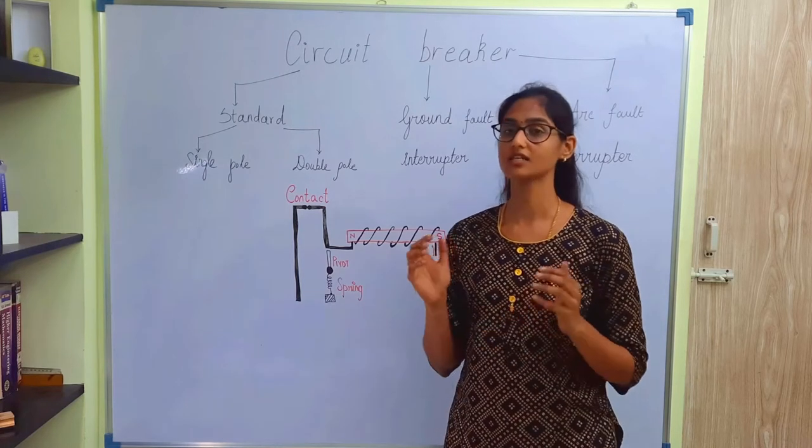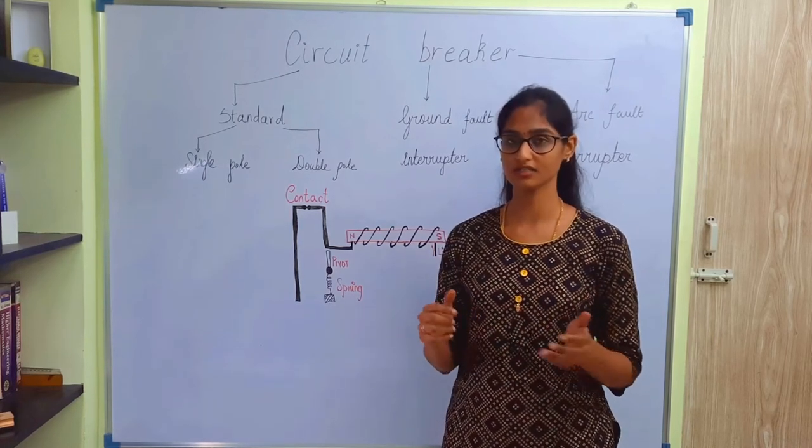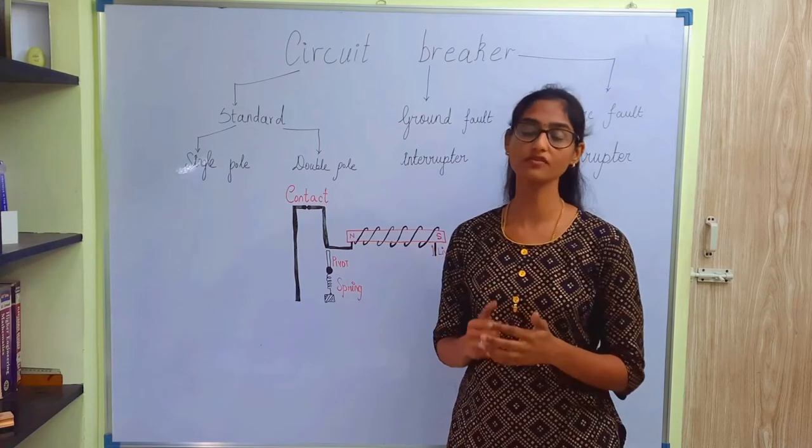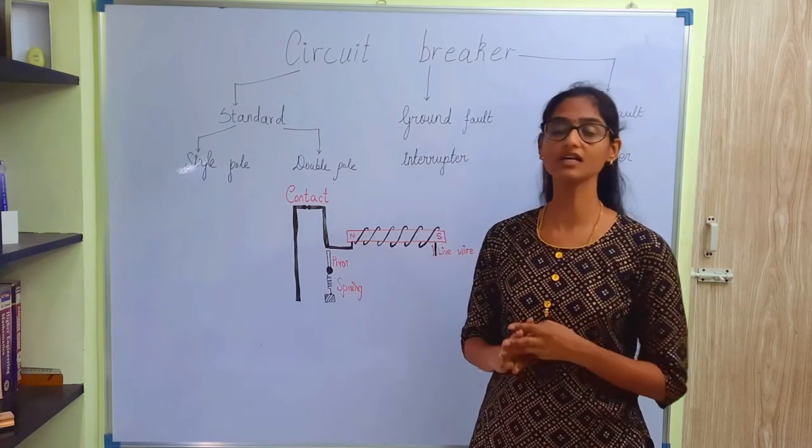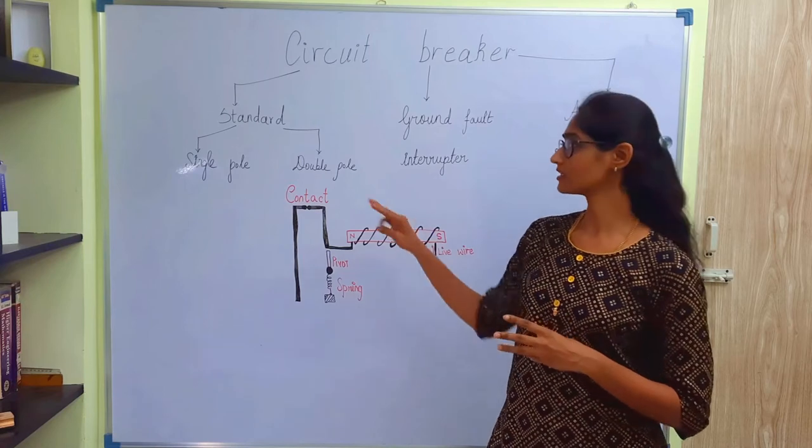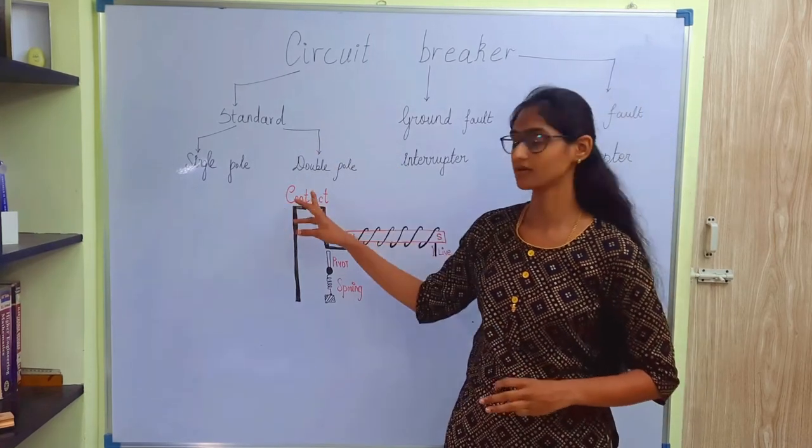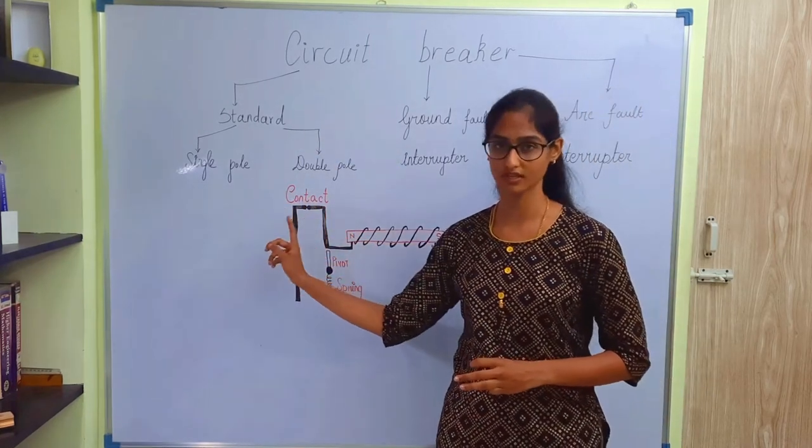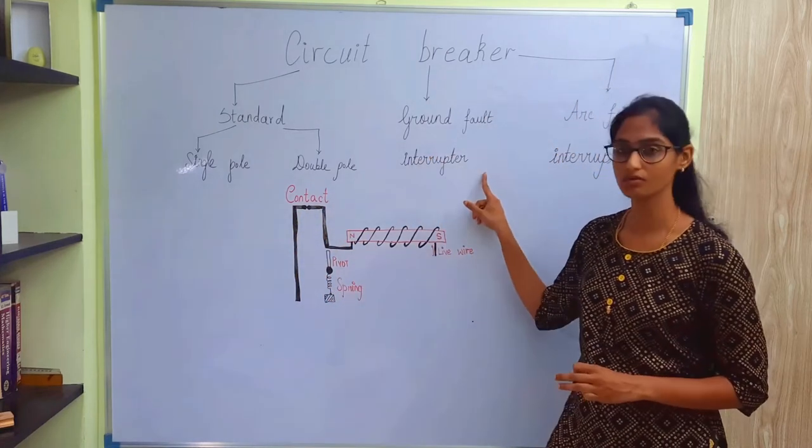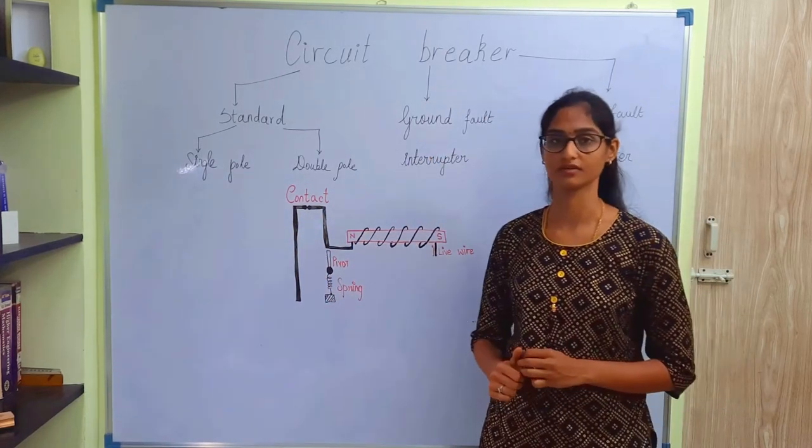In general, a circuit breaker is a device that trips the current passing through the load in case of abnormalities. There are three kinds of circuit breaker: one is the standard single and double pole, which is used domestically. Next, we have a ground fault interrupter and then arc fault interrupter.